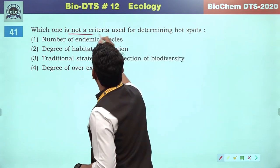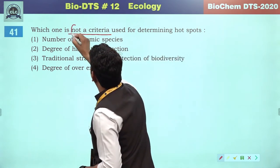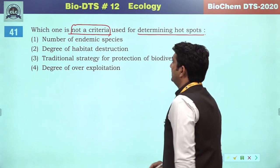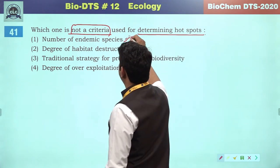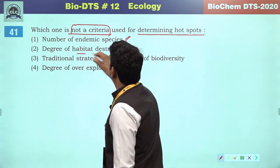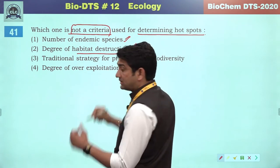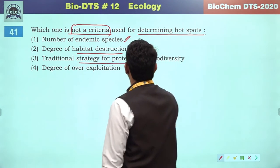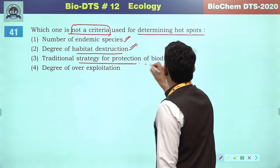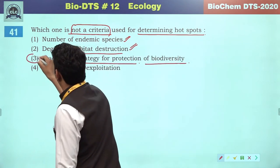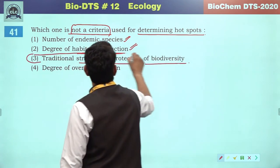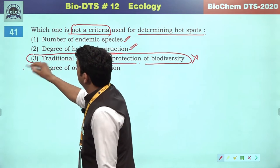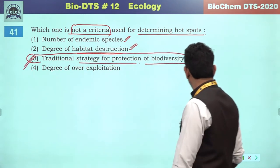Which one is not a criteria used for determining hotspots? Number of endemic species — definitely a criteria. Degree of habitat destruction — the most appropriate or key criteria. Traditional strategy for the protection of biodiversity — this is not applied as criteria for hotspots, so it is the incorrect reference. Third will be the correct answer.